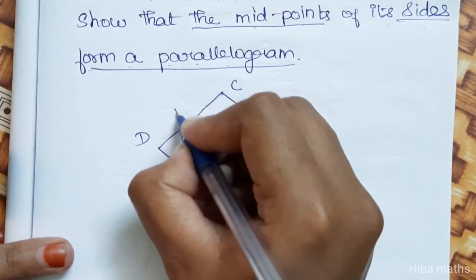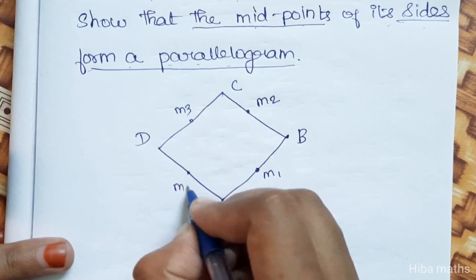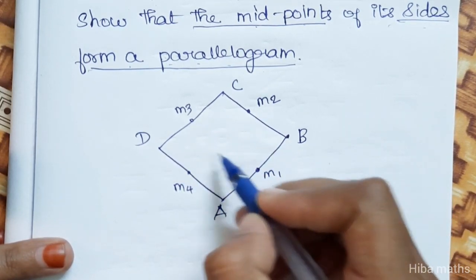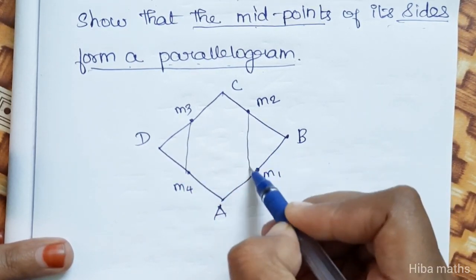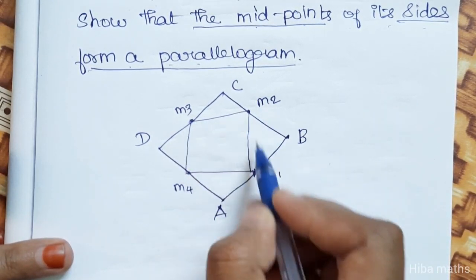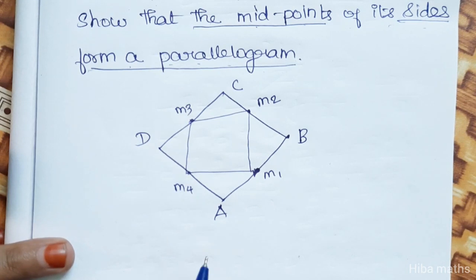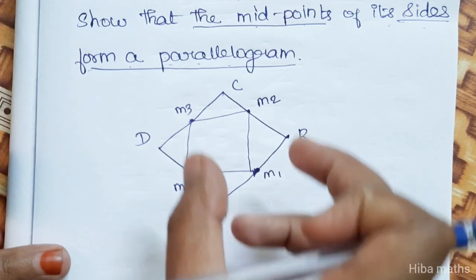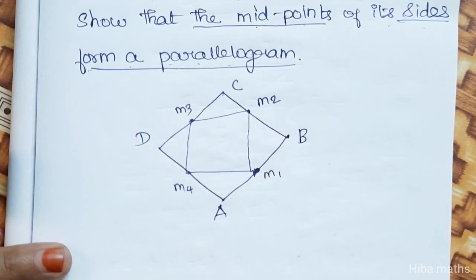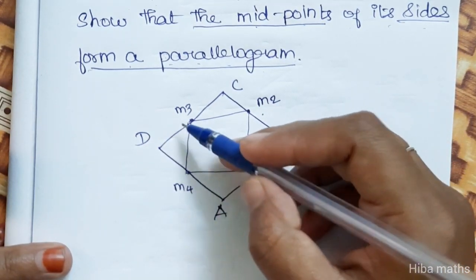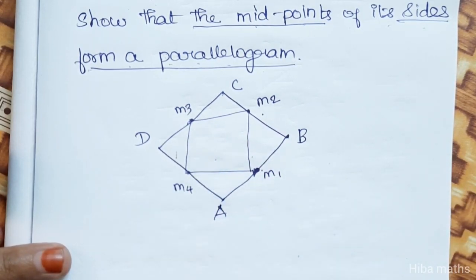We label the midpoints M1, M2, M3, M4. If you join the midpoints, the result is a parallelogram. The condition for a parallelogram is: the slope of M1-M4 equals the slope of M2-M3, and the slope of M1-M2 equals the slope of M3-M4. Opposite sides have equal slopes.